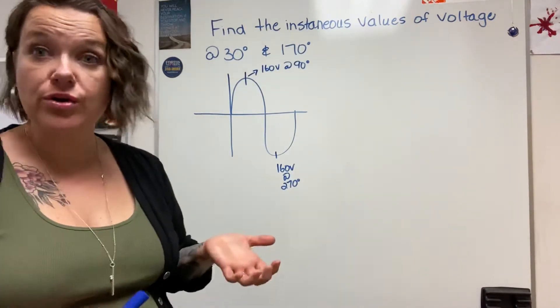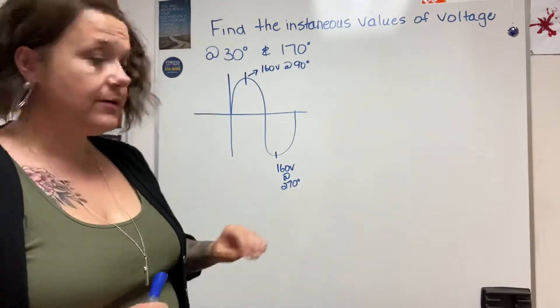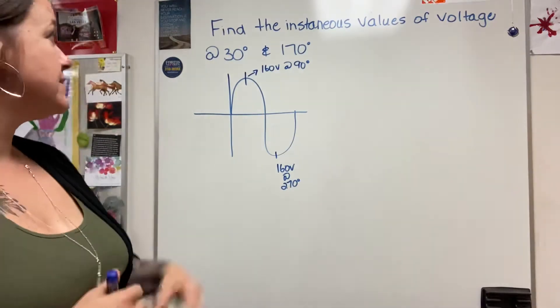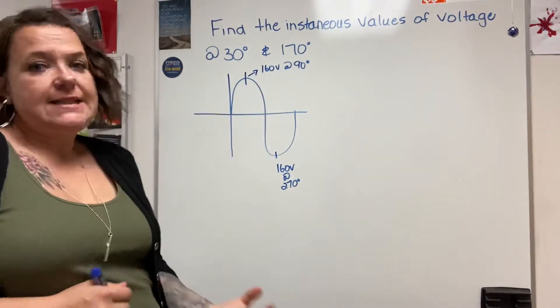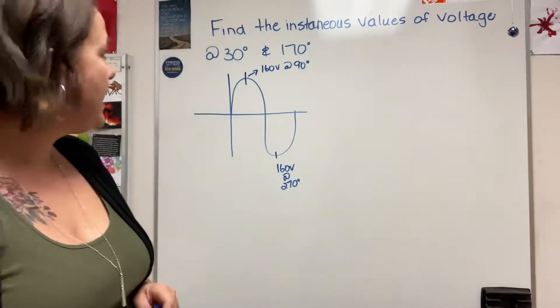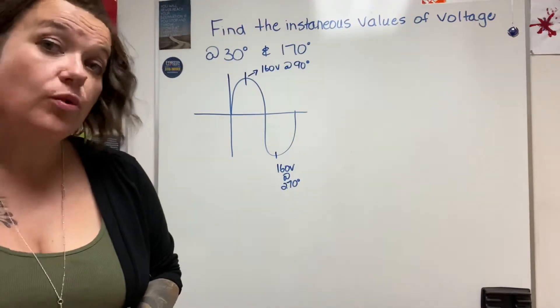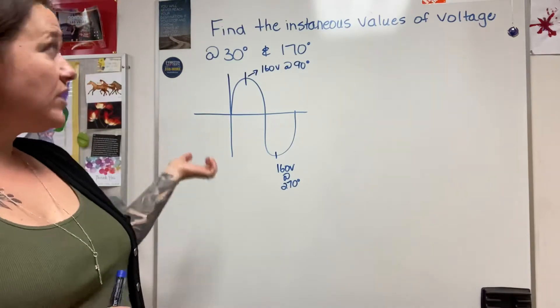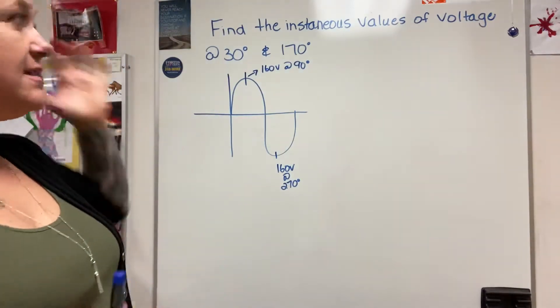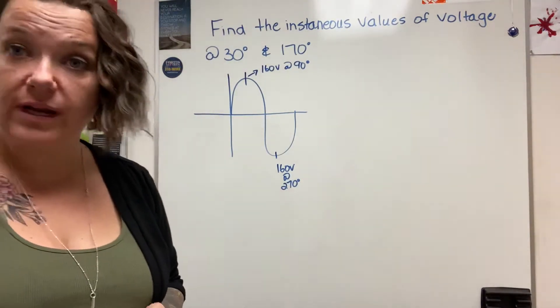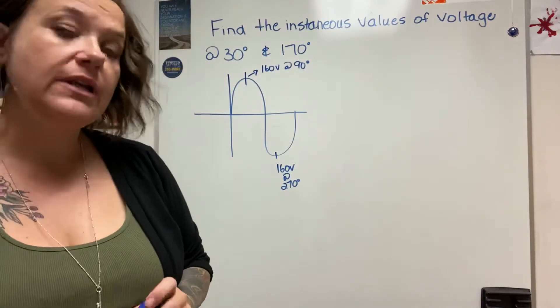The peaks are occurring at 90 degrees as well as at 270 degrees. Here we have 160 volts being generated at 90 degrees and 160 volts generated at 270 degrees. The question is asking me the instantaneous value of voltage at 30 and 170 degrees.